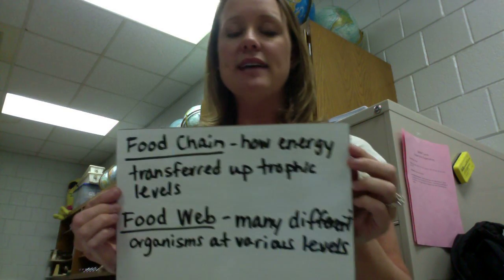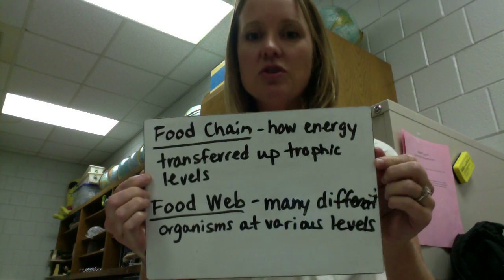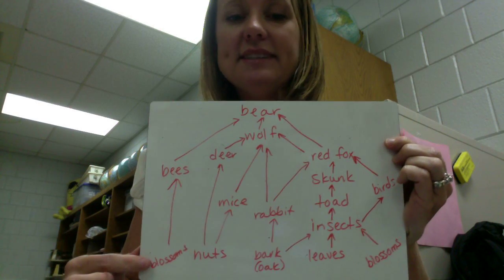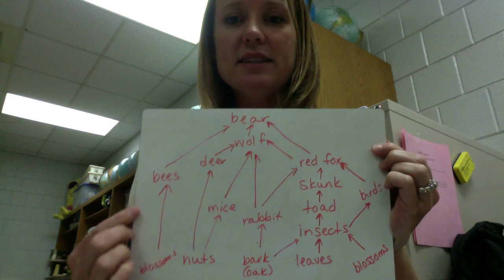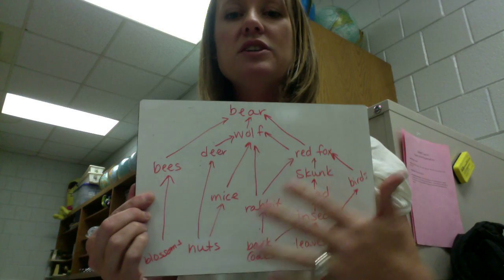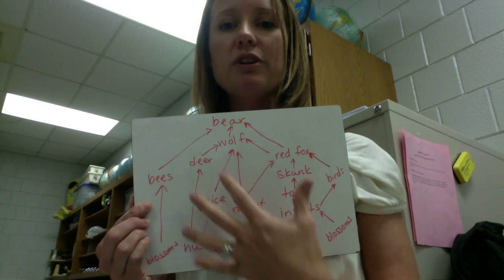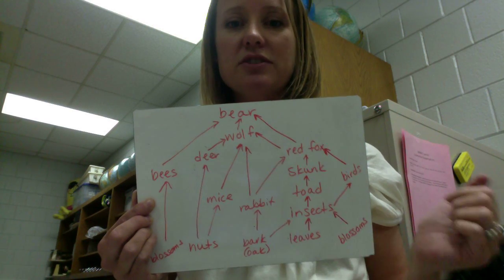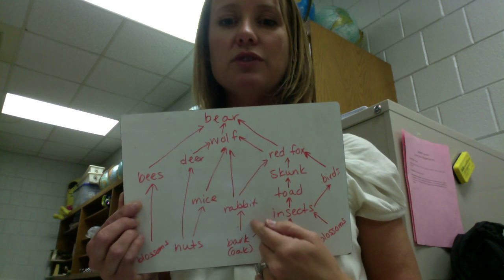So far we've been looking at food chains — how energy is transferred from one trophic level to the next. If we combine multiple food chains and look at many different organisms at various trophic levels, that's when we get a food web. Here is an example: on one side there's a simple food chain — bears eat bees that eat blossoms. On the other side, the bear eats the fox that eats the birds, but the wolf also eats the fox, and the fox also eats the skunk — a much more complicated relationship. This model is not complete, as not every organism in the ecosystem can be shown. Decomposers and detritivores act at each of these levels. Notice again that arrows go in the direction of energy flow — if the rabbit eats bark from the oak tree, energy is transferred from the oak tree to the rabbit.